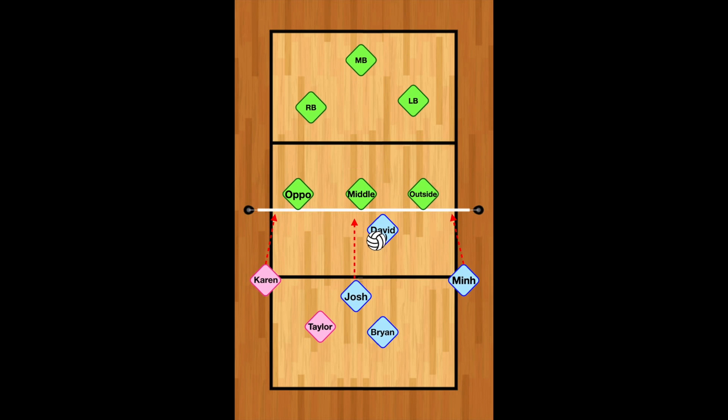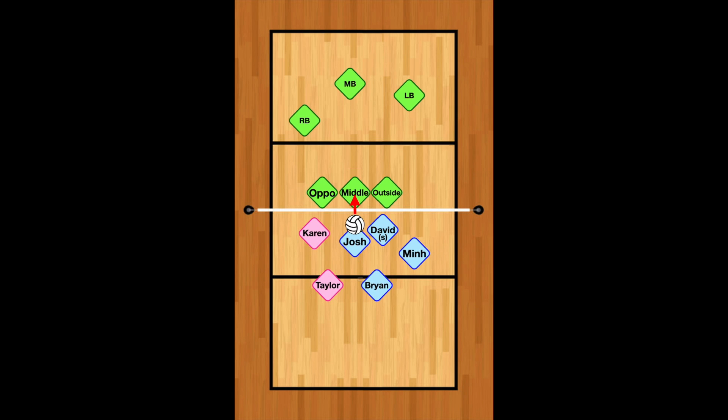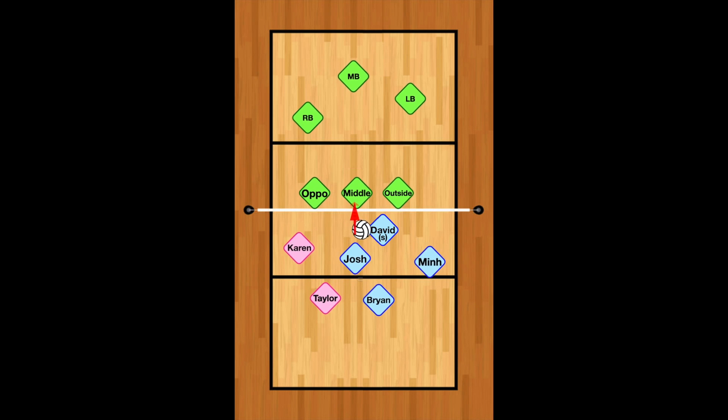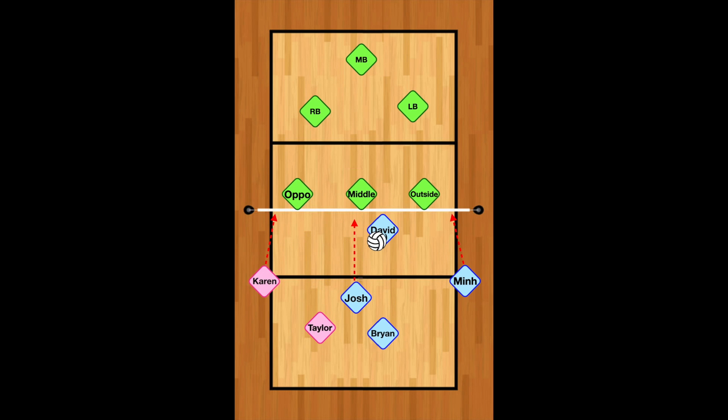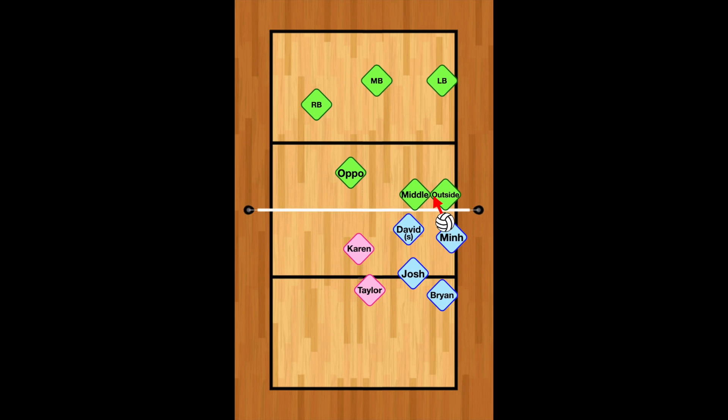We are covering Karen's hit. That's how close we should get. I mean, if you watch like college level playing they actually get closer than this. Now he's going to set Josh. All the blockers on the other side, and we are covering all around him. And then he's going to set me and we're covering my hit.